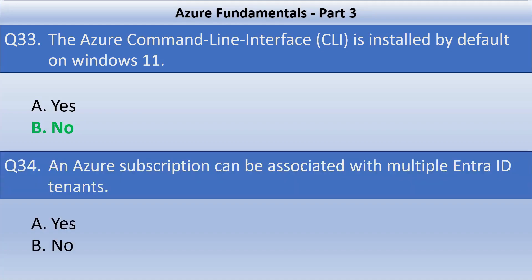The next statement is: an Azure subscription can be associated with multiple Entra ID tenants. This is also an incorrect statement. An Entra ID tenant can have multiple subscriptions, but an Azure subscription can only be associated with one tenant. This question can be reworded into a true statement: an Entra ID tenant can have multiple subscriptions — and that is a correct statement.